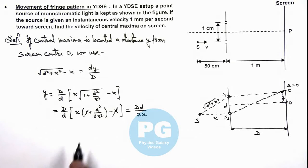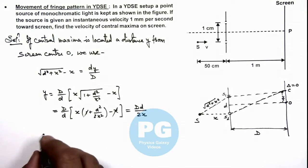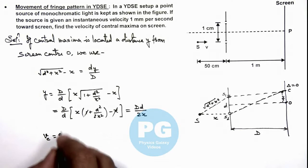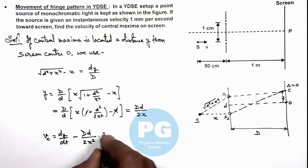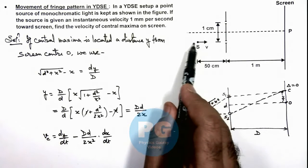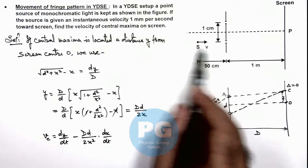So as we have got the value of y, in this situation we can calculate the velocity of central maxima as dy by dt. So if we differentiate this expression, we get minus Dd by 2x squared, multiplied by dx by dt.